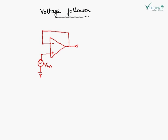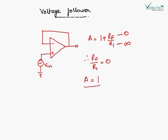This is a voltage follower circuit, which is in the form of a non-inverting amplifier. The gain of a non-inverting amplifier is 1 plus RF upon R1. Here RF is 0 and R1 is infinite, so RF upon R1 equals 0. Therefore, the gain of the circuit is 1. A voltage follower is a circuit which gives a gain equal to 1.